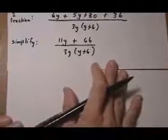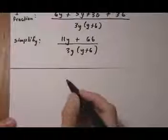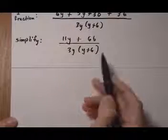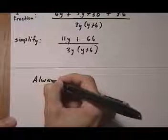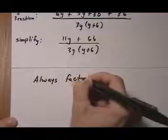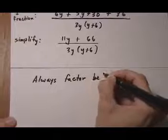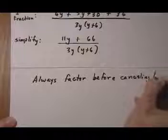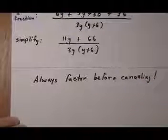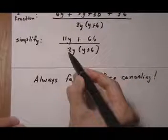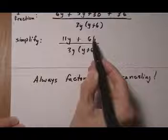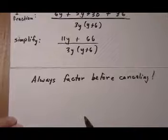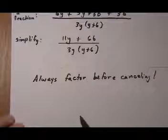And now that we've simplified, the next step we want to do is see if we can cancel anything out. But remember, as far as canceling out, always factor before canceling. So you don't want to go in here and say, well this 3 cancels out with the 66, because 66 divided by 3 gives us 22. You don't want to cancel like that. You've got to factor first, because you can only cancel common factors.